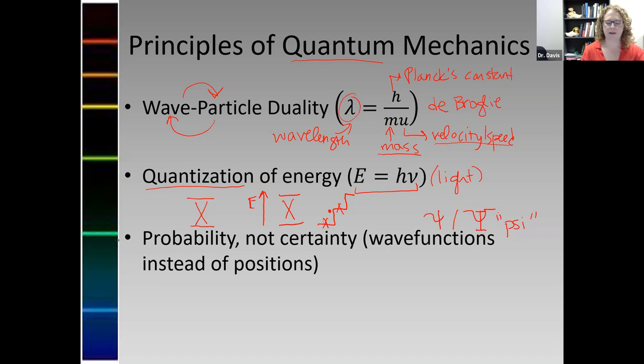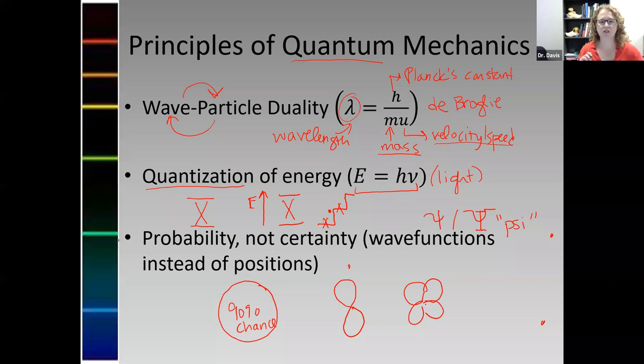And what we can't do is we can't say an electron is here, or an electron is here, or an electron is here. I can say, I have a map, and there's a 90% chance that I live inside this map as the electron. Maps look different. They can be dumbbells. They can be clover shapes. But all of those maps are a probability. I cannot say with certainty where a particle is. And we do have an equation for that.